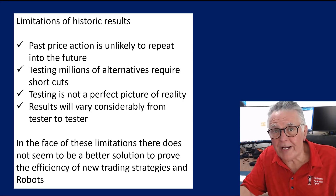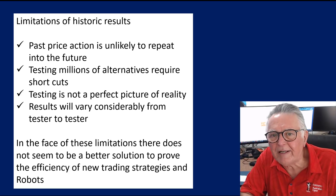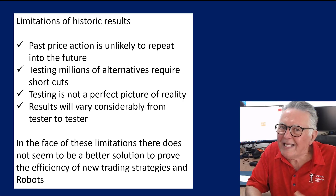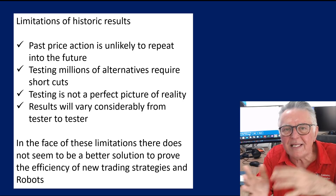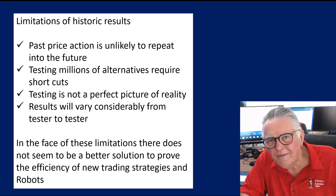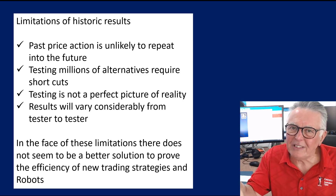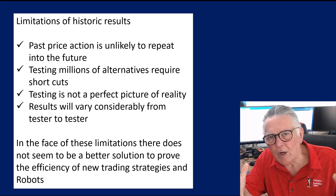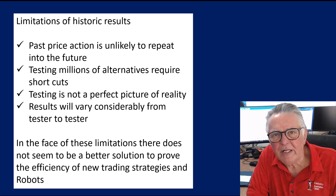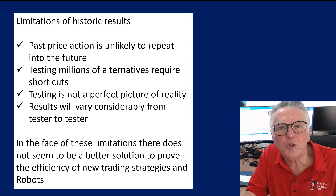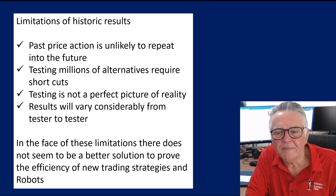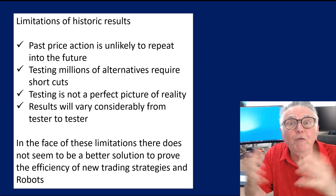What you're going to see today are historic results, and the biggest limitation is that the price action that caused those results is not likely to repeat again in the future. There will be uptrends and downtrends, but the sequence, length, and duration are unlikely to repeat. You can't say that because a robot did well in the past it is guaranteed to do well in the future. One has to take shortcuts — you can't test zillions of options.